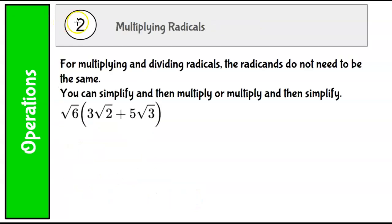For multiplying and dividing radicals, the radicands don't need to be the same. Just like we can multiply x times x squared, but we can't add x plus x squared. Same thing here. We can multiply things that don't have the same radicand. Same thing for dividing. You can simplify and then multiply or multiply and then simplify. So I'll show you what I mean here in a minute.